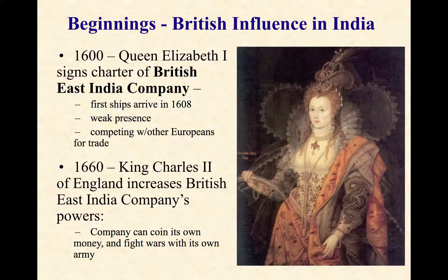In 1600, the aging Queen Elizabeth — daughter of Henry VIII — signed a royal charter, essentially a permission slip, to create a new joint stock company that investors in Britain could buy shares of. They called this the British East India Company. I know from U.S. History 1 you talked about the Virginia Company — that was another joint stock company hoping to gain wealth in the Americas. The British East India Company was another one coming into existence around the same time. The first British ships started arriving in India as early as 1608, right about the time the Jamestown colony was starting in North America.